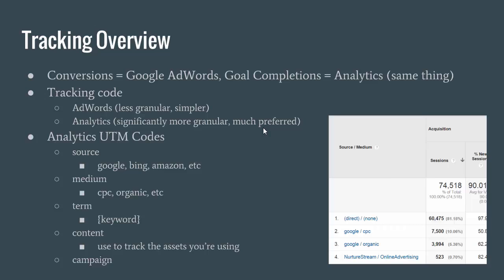In analytics, the way that we track our conversions is by using UTM codes. People who have even used Google Analytics before may not really have — well, if you're an experienced user, you definitely should have used them by now. A lot of the UTM codes are automatically imported from AdWords already. There's a setting that defaults to import that data for you so that you don't have to actually manually input it. The first two main UTM codes are source and medium. Source is the platform that you're coming from — that's going to be Google, Bing, Amazon, eBay, et cetera.